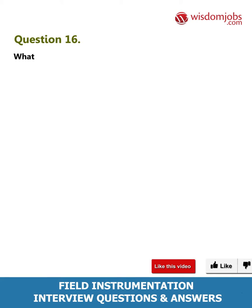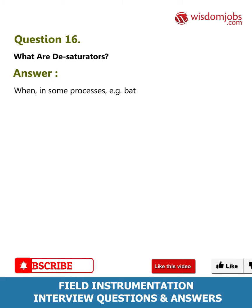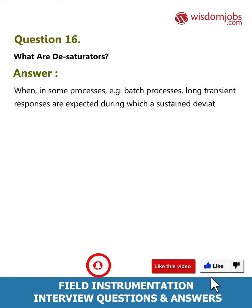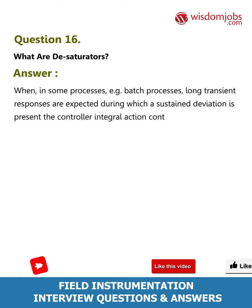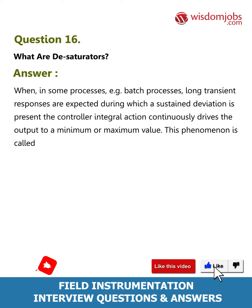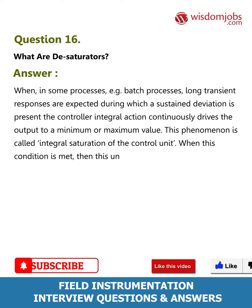Question 16: What are saturators? Answer: In some processes, for example batch processes, long transient responses are expected during which a sustained deviation is present. The controller integral action continuously drives the output to a minimum or maximum value. This phenomenon is called integral saturation of the control unit. When this condition is met, then this unit is desaturated.